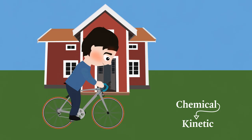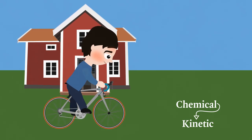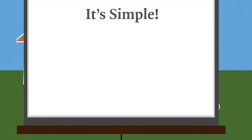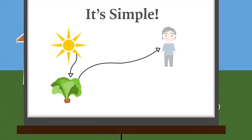After converting all this chemical energy into kinetic and thermal energy, you return home. It's simple. Energy is moving from the sun to the lettuce to your body and then used to pedal the bicycle.